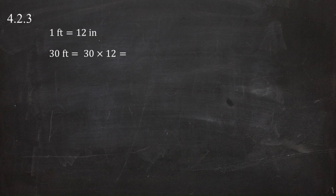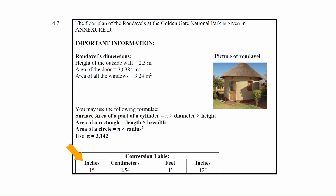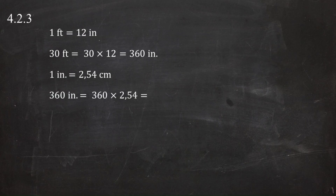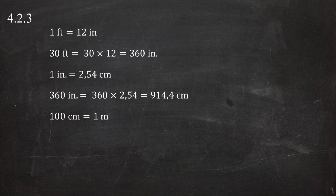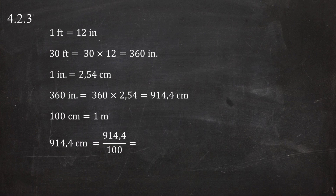From the conversion table, 1 inch equals 2.54 centimeters. So 360 inches equals 360 multiplied by 2.54, giving 914.4 centimeters. Converting to meters: 914.4 divided by 100 equals 9.144 meters. Rounding to the nearest meter gives a diameter of 9 meters, which is what we needed to show.